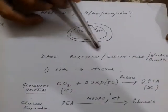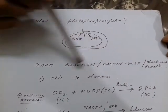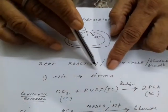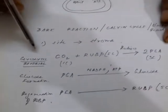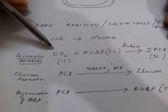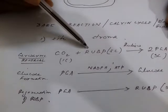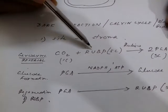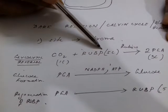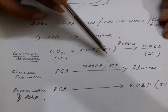The dark reaction is also known as the Calvin cycle, or sometimes it is called the Blackman's reaction. The site of the dark reaction is the stroma. Carbon dioxide enters through the stomata and is absorbed by an intermediate compound called RUBP — ribulose bisphosphate.